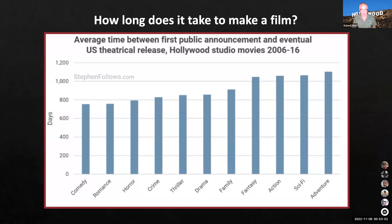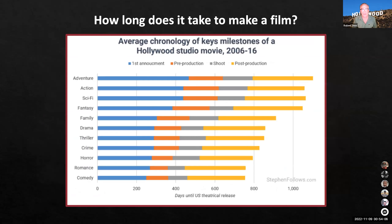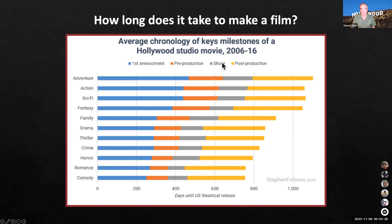How long does it take to make a film? Comedies, romance, and horror are simpler, cheaper genres that take less time. Sci-fi, action, and adventure are higher budget, more complicated, with more action shots — they take longer. The shoot is actually maybe the smallest amount of time, but it costs the most money. Looking at a chronology of key milestones in a Hollywood studio movie, the more complex adventure, action, sci-fi, and fantasy productions take longer across all phases.